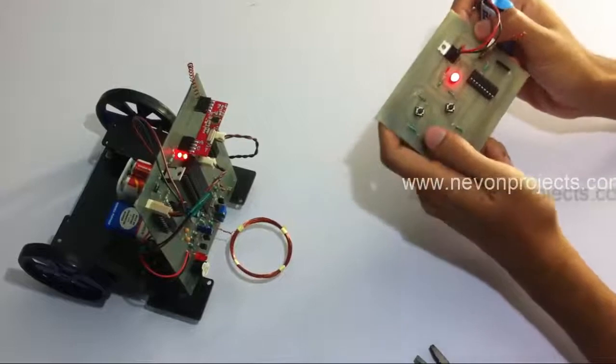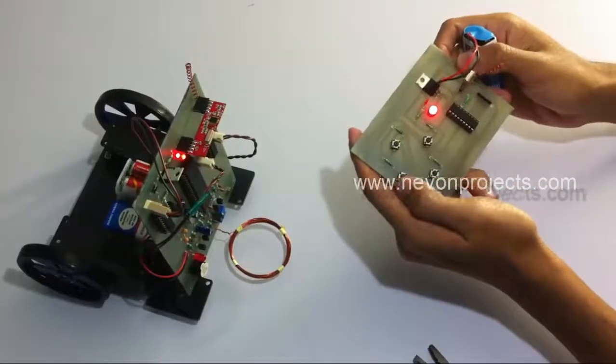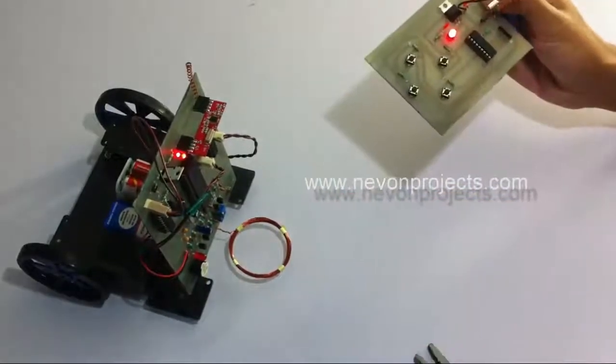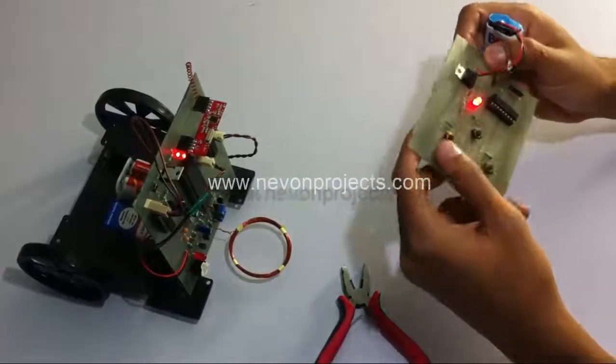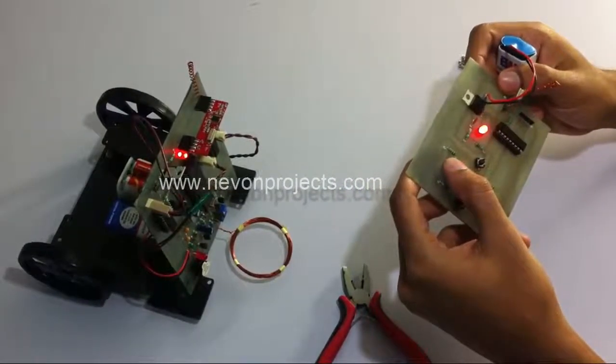This is how the user can remotely operate the robotic vehicle. Now let's take it over a piece of metal and see what happens.